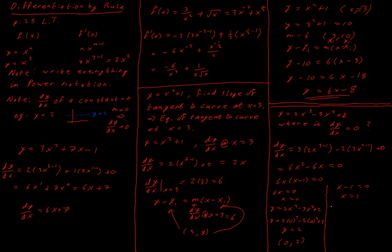Then when x is one, I sub into my original equation. I have two times one cubed minus three times one squared plus two. y ends up being equal to one. So I end up with (1, 1) as my other point where dy/dx equals zero, where the slope of the tangent to the curve is equal to zero.